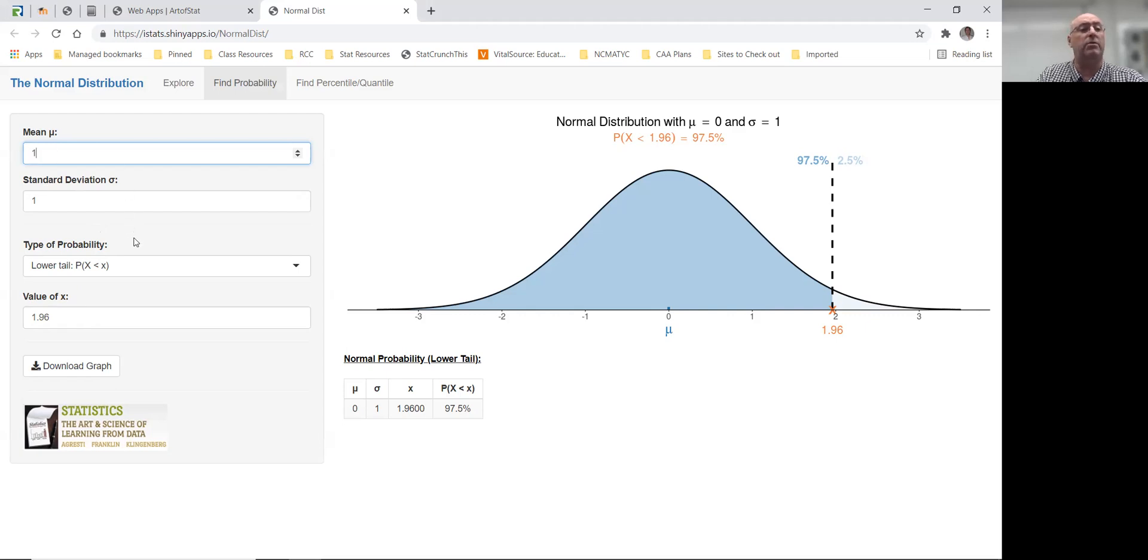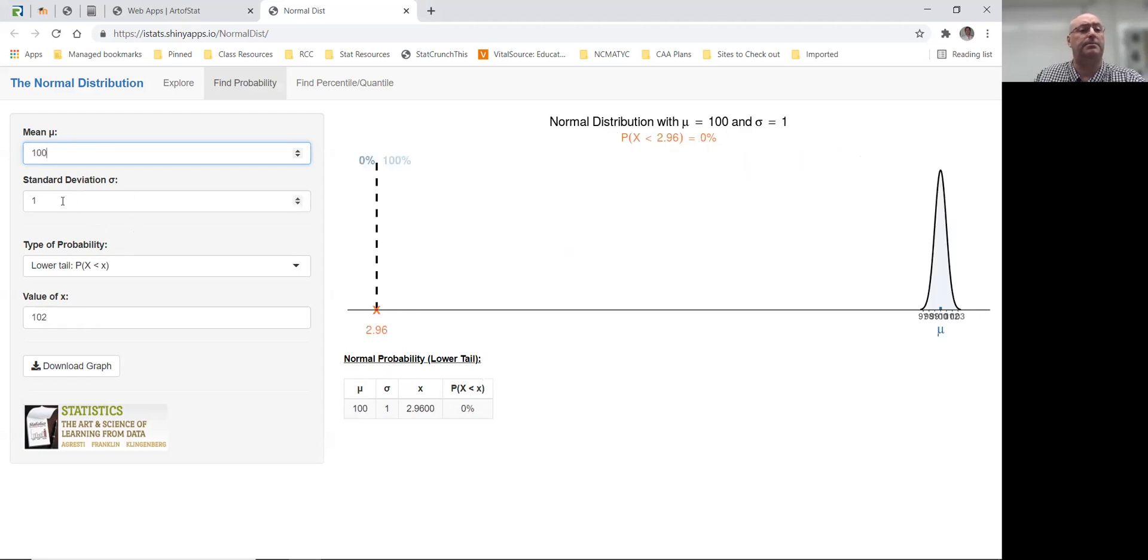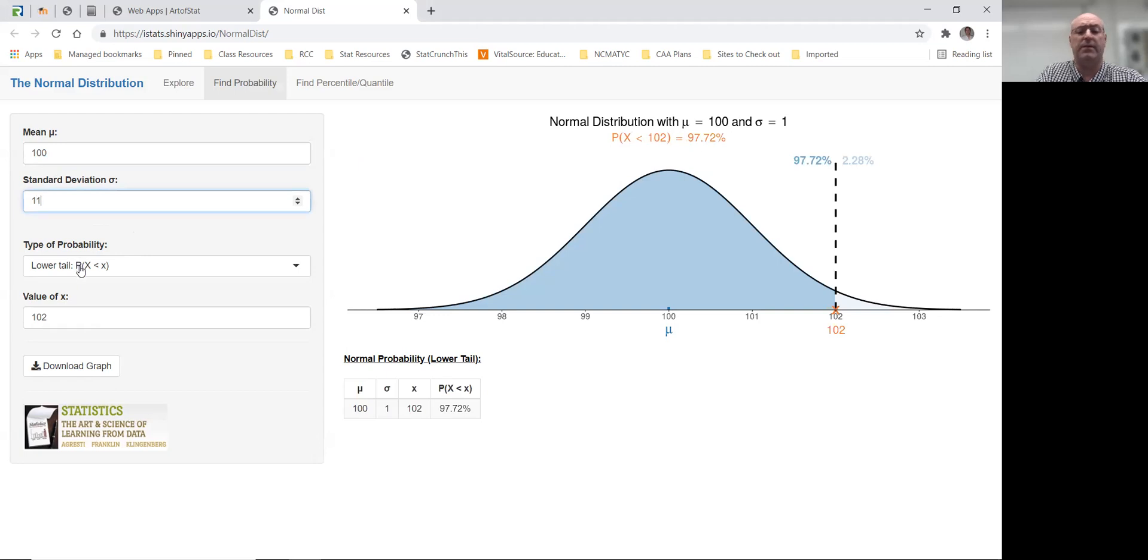Well, IQ scores have a mean of 100, a standard deviation of 15, and we want to know what percent are greater than, so we go to the upper tail test, x is greater than.